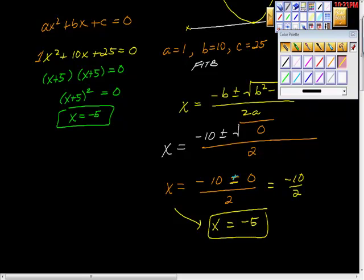Here we have x is equal to negative 5. The only way I could make this answer look more like this answer is to do this. So I'll do it. x is negative 5, x is negative 5 is our solution.